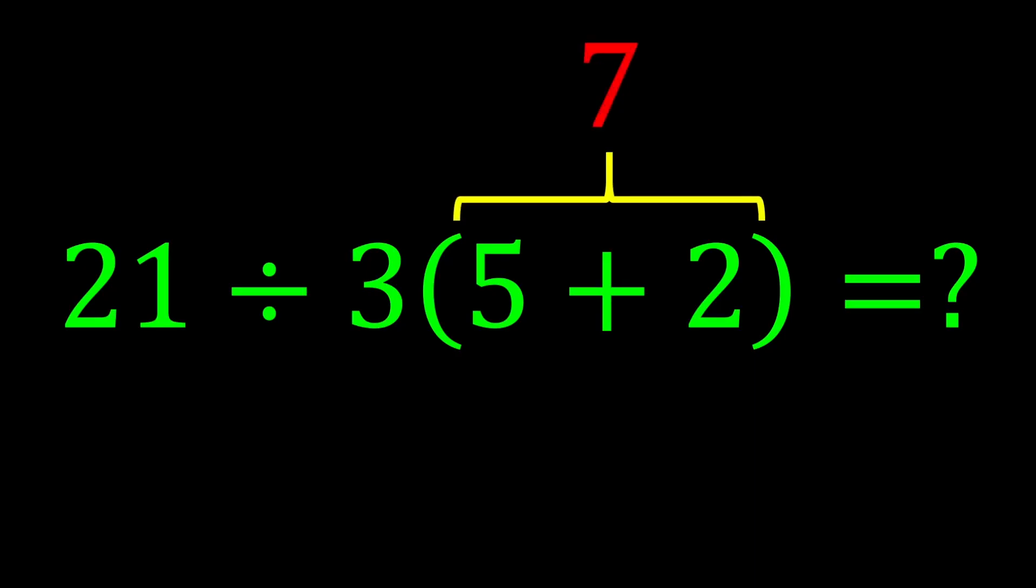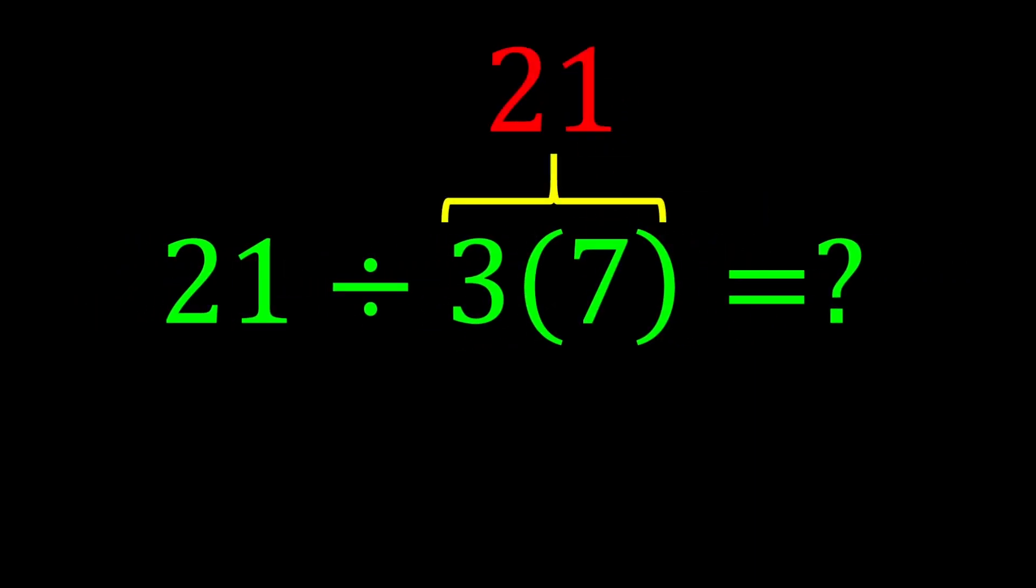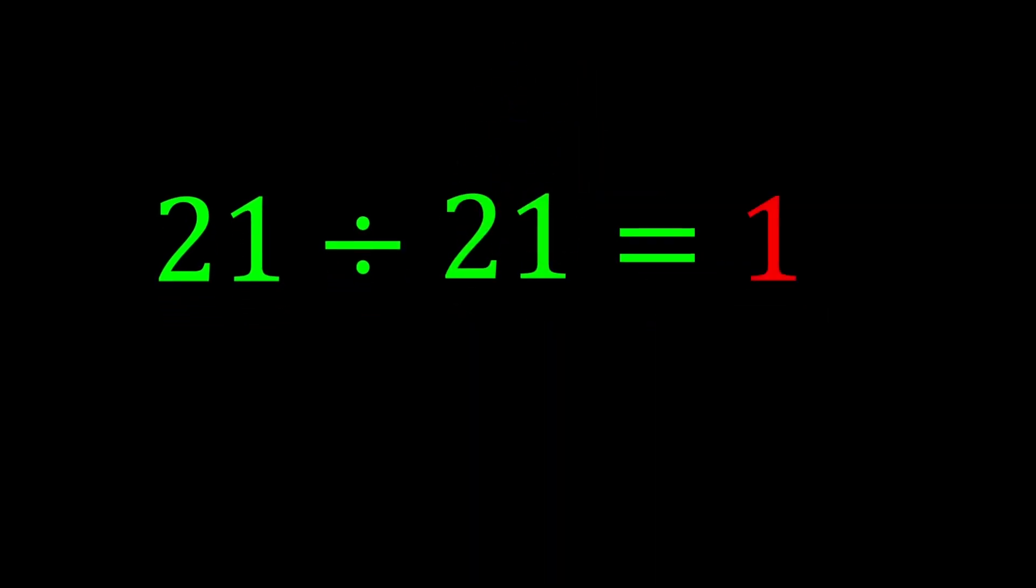5 plus 2 gives us 7. 3 multiplied by 7 gives us 21. Finally, 21 divided by 21 gives us 1.